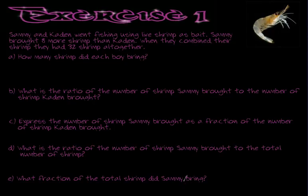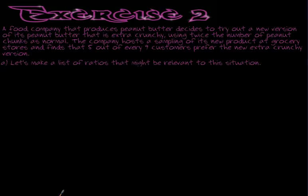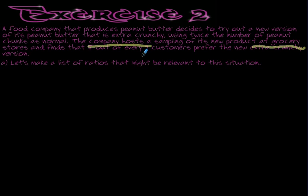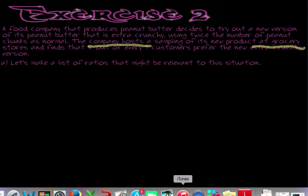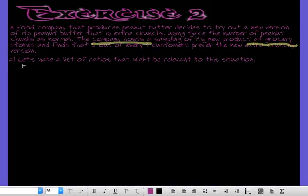We're going to skip exercise 1 for now and turn to exercise 2. With exercise 2, we're talking about a food company that produces peanut butter. From the problem we find out that 5 out of every 9 customers prefer new extra chunky peanut butter. So 5 out of every 9 — right now this is a fraction. But I can use that fraction to write it as a ratio.